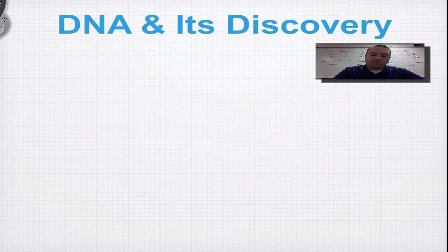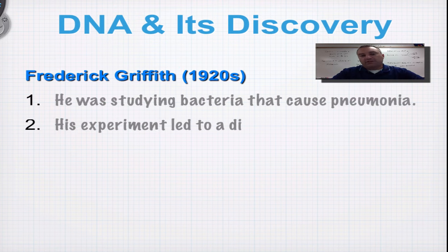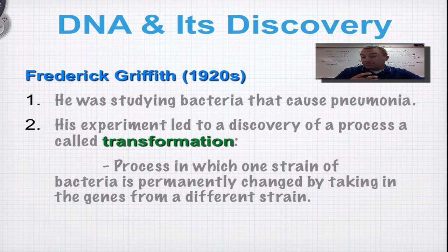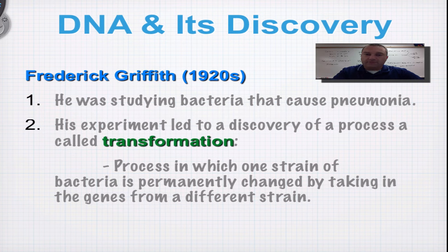First is Frederick Griffith, who did his work in the 1920s studying bacteria that caused pneumonia. Pneumonia is a disease where you get a bacterial infection in your lungs — they fill up with fluid, you don't get enough oxygen, and it can be fatal. Back then, just before antibiotics were available, pneumonia was a very important killer. Today it's less deadly because we have antibiotics.